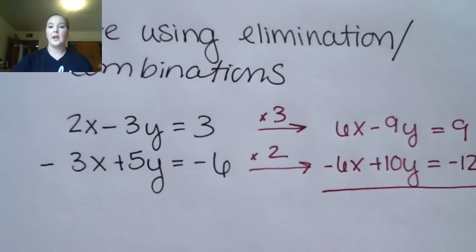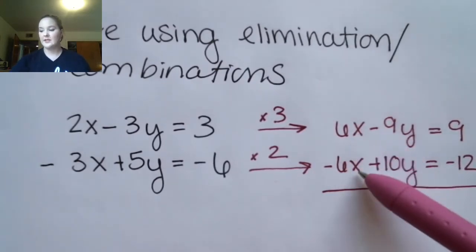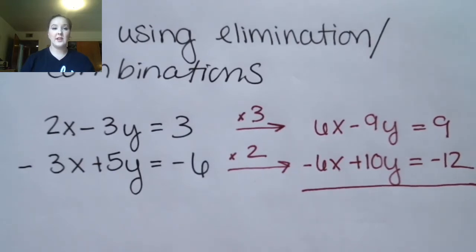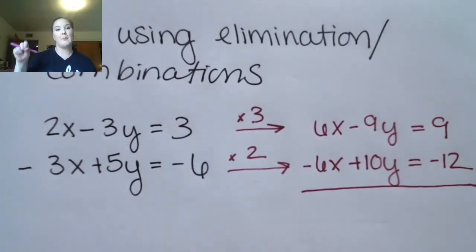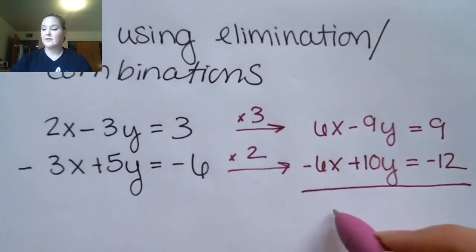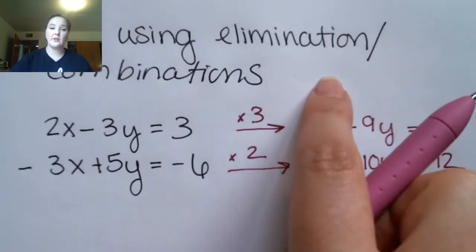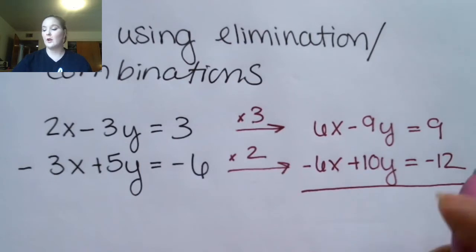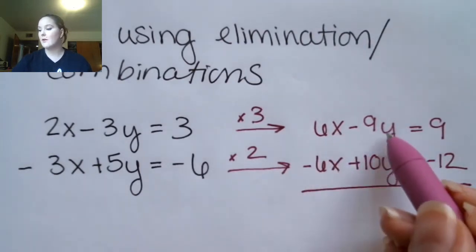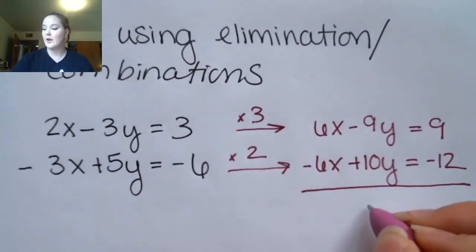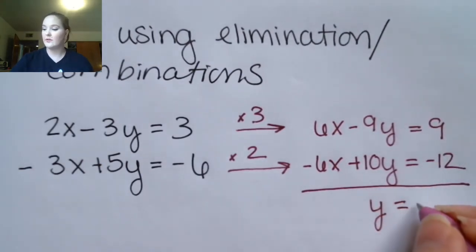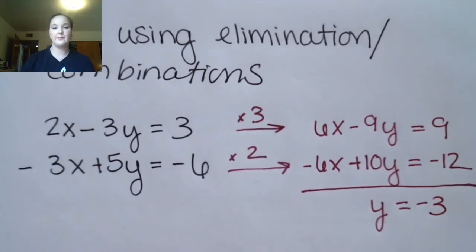Now we have 6 and negative 6. When you add these two together — that's the combination part — 6 plus negative 6 is zero, which is why it's called elimination: you're eliminating one of the variables. Negative 9 plus 10y is 1y, and 9 plus negative 12 is negative 3.